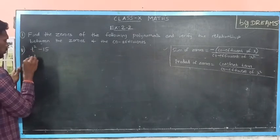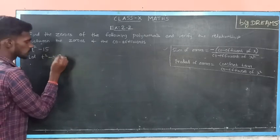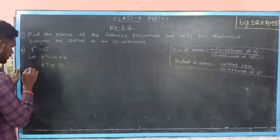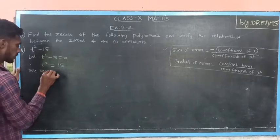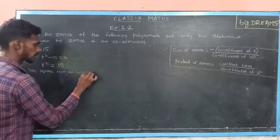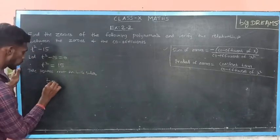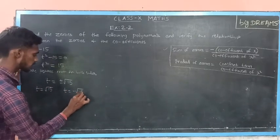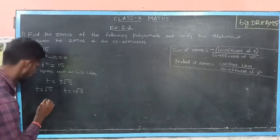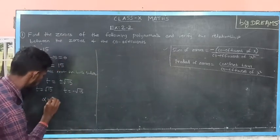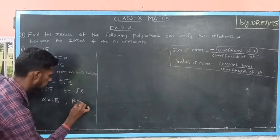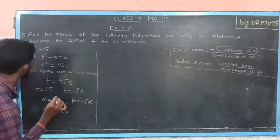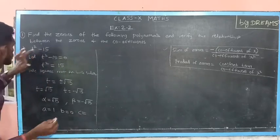Next, the fifth subdivision: t squared minus 15. Let us substitute the value of the polynomial to be 0. So, t squared minus 15 is equal to 0. Taking 15 to the right side, t squared is equal to 15. Now, taking square root on both sides, I will get t is equal to plus or minus root 15. Either t is equal to plus root 15 or t is equal to minus root 15. These are the zeros of the given quadratic polynomial. Let us substitute alpha is equal to root 15 and beta is equal to minus root 15. Comparing to standard form: a is 1, b is 0 because there is no x term, and c is minus 15, the constant term.